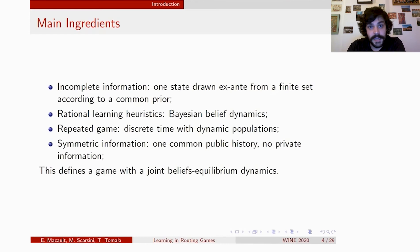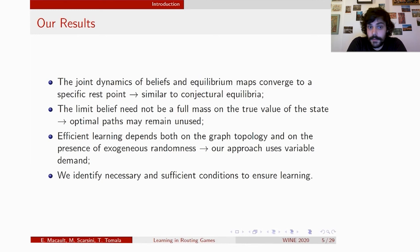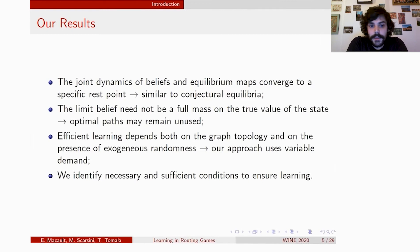Combining all of these elements defines a game with a joint dynamics between beliefs and equilibria, and the whole question is to study these dynamics: how do they behave, do they converge, and if they do, where? In our paper, we prove that these dynamics do converge to a limit map resembling conjectural equilibria, but the limit belief needs not converge to the truth, and some optimal paths may remain unused in the long run. We also show that efficient learning depends on the graph topology and on exogenous randomness — specifically variable demand — and we identify necessary and sufficient conditions for efficient learning under variable demand.